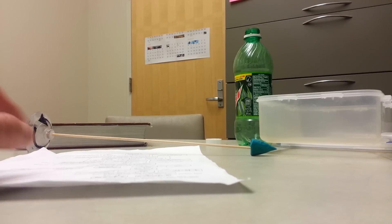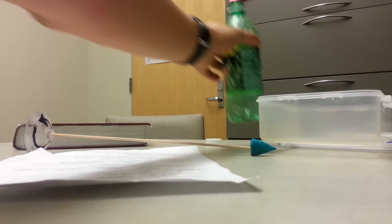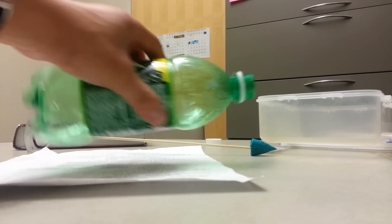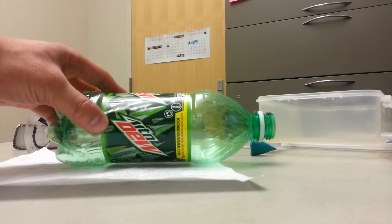So Stokes' theorem is the one, remember, that has the curl of F in it. And how I'd like to demonstrate that is using this soda bottle.